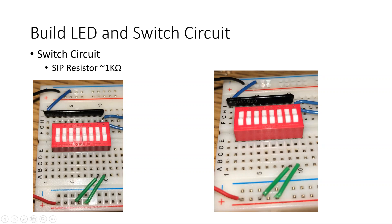And from there, we're going to take our 1k ohm SIP resistor pack and we're going to place it to the opposite side here of our breadboard. Now it's important to note that we're going to offset this one by one pin.